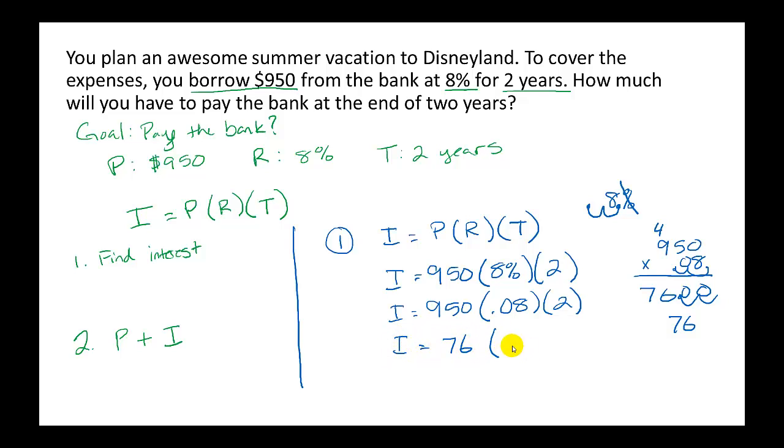That's for 1 year. So now we need to multiply by 2 to find out how much for 2 years. Get 12, 14, 15. There is no place for a decimal, so we are done. The interest for 2 years is $152.